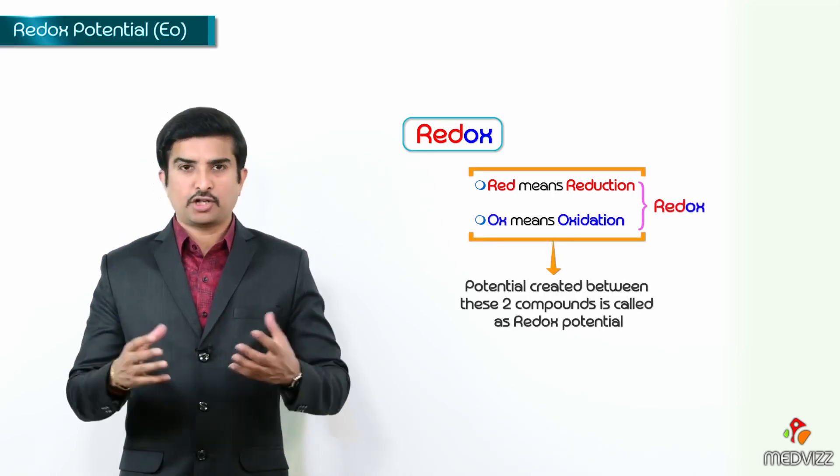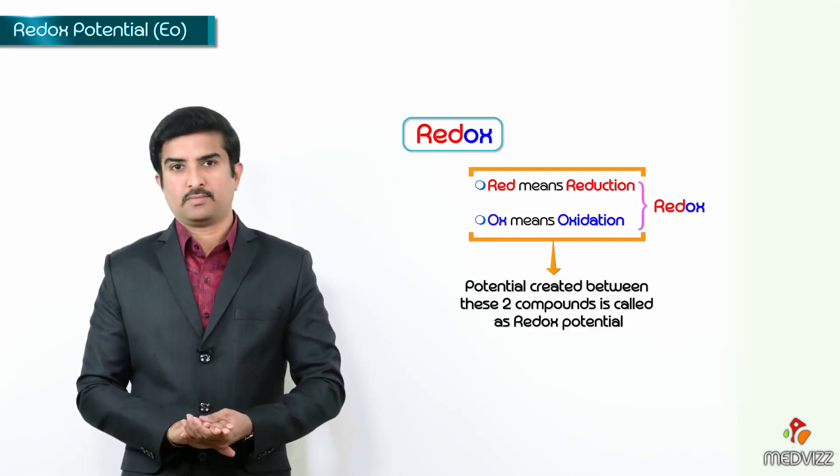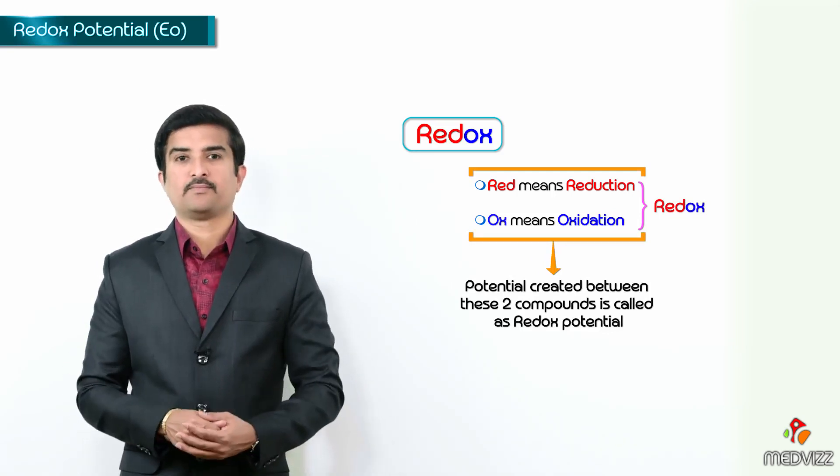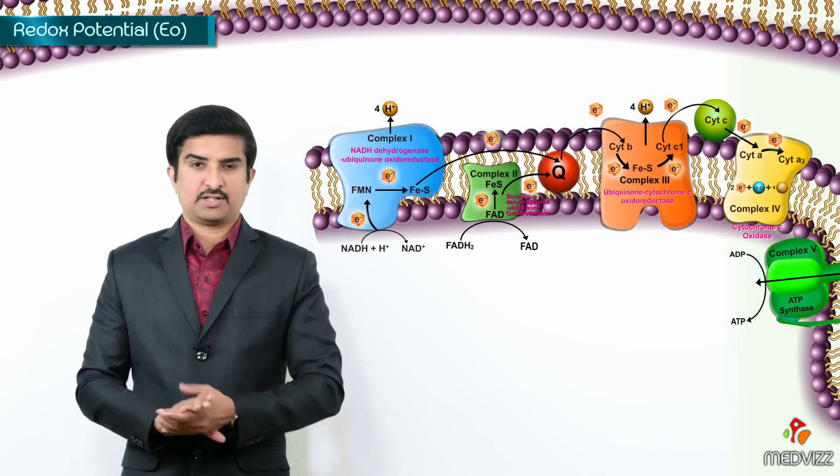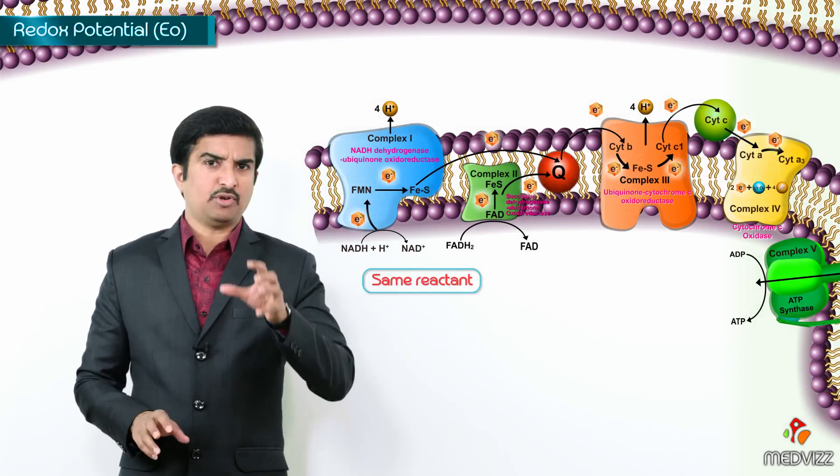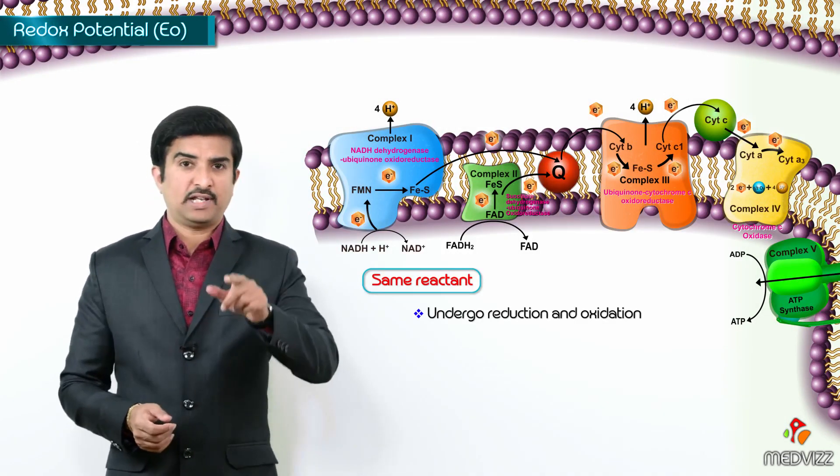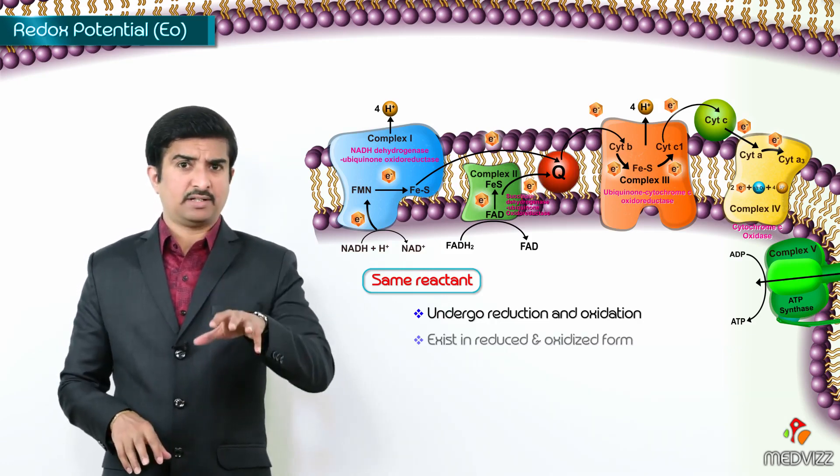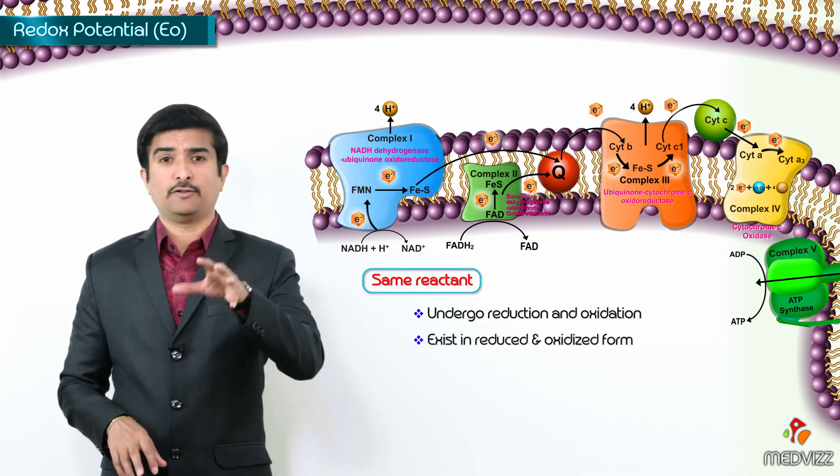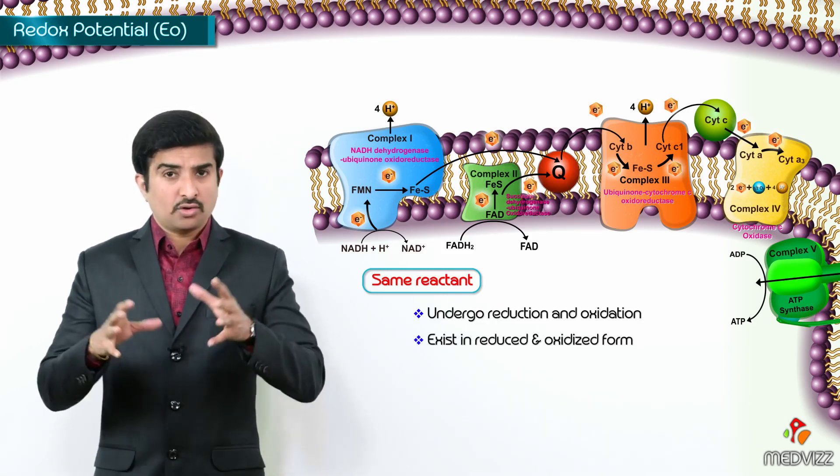And the potential which has been created between these two compounds is called as redox potential, which means a reactant, the same reactant which can undergo reduction as well as oxidation. And the same reactant can exist in both the forms, that is the reduced form as well as in the oxidized form.